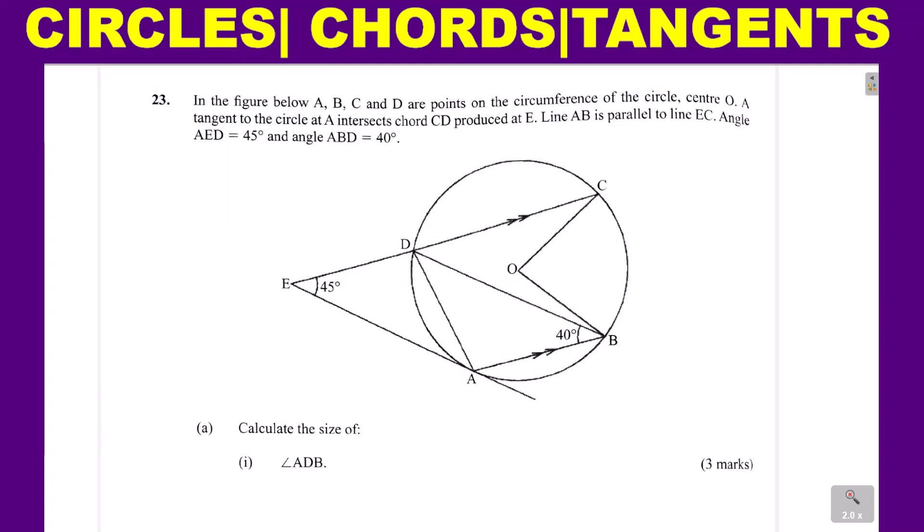In the figure below, ABCD are points on the circumference of the circle, center O. A tangent to the circle at A intersects chord CD produced at E. Line AB is parallel to line EC. Angle AED is equal to 45 degrees, and angle ABD is equal to 40 degrees. All the angles are indicated in the figure.